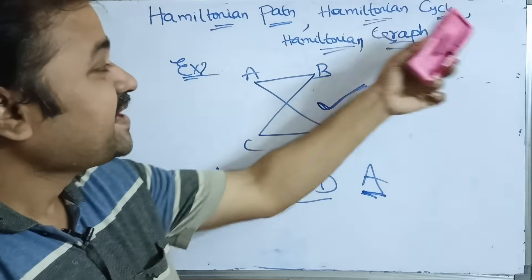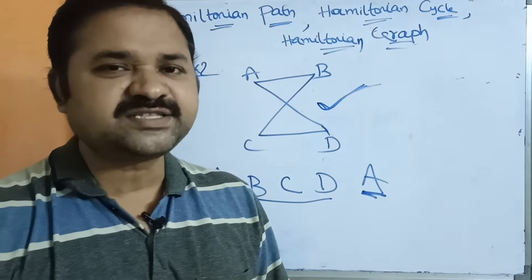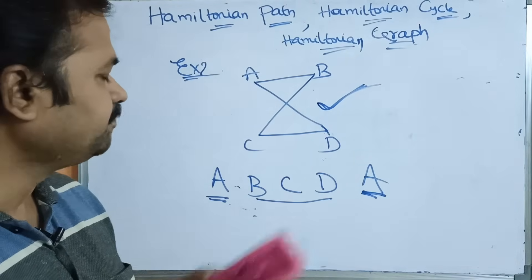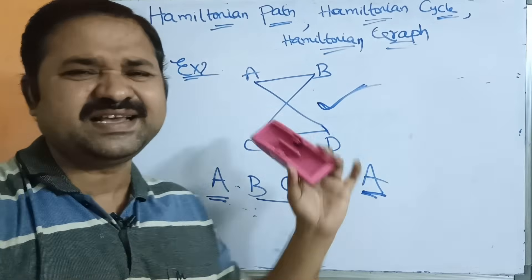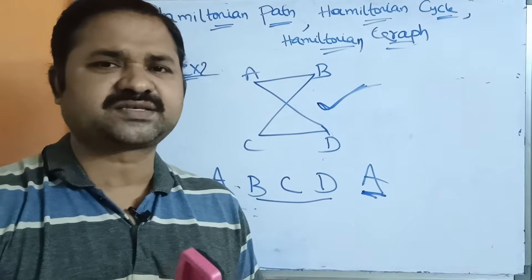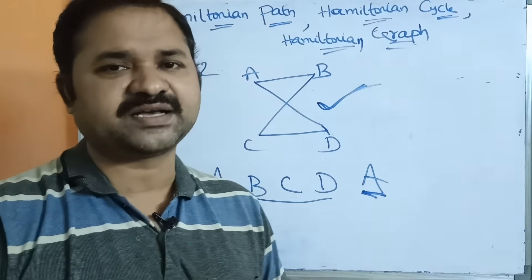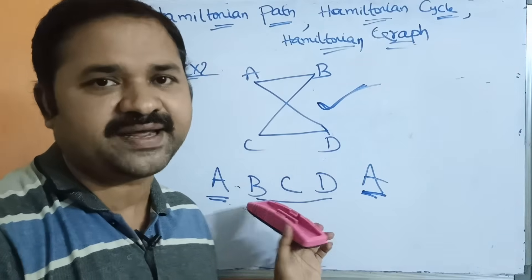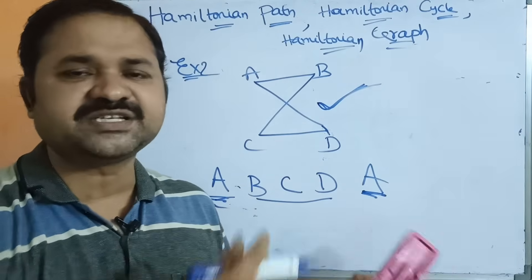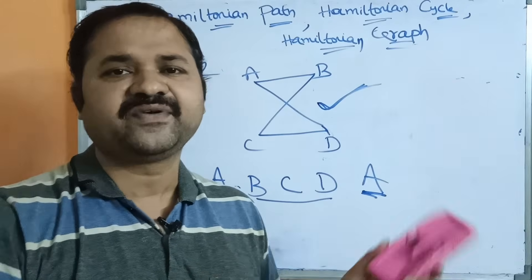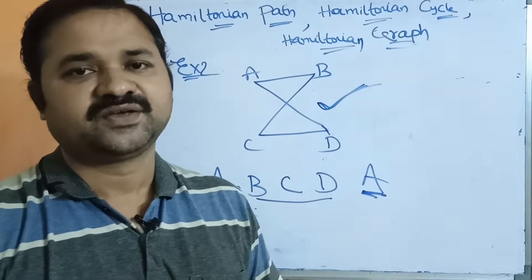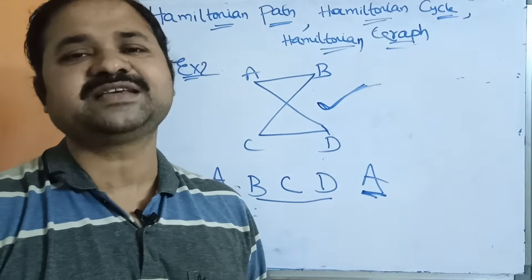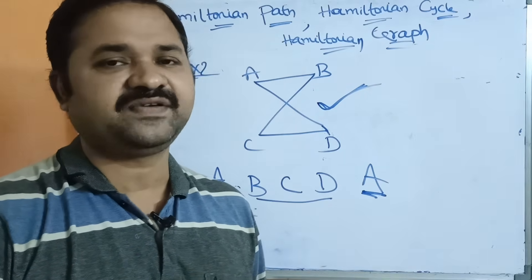This is about Hamiltonian path, Hamiltonian cycle (also called Hamiltonian circuit), and Hamiltonian graph. Unlike Euler graphs, there is no need to use any formula for Hamiltonian graphs. We simply start at a particular vertex, visit all remaining vertices, and return to the starting vertex. If that condition is satisfied, the circuit is a Hamiltonian circuit and the graph is a Hamiltonian graph.